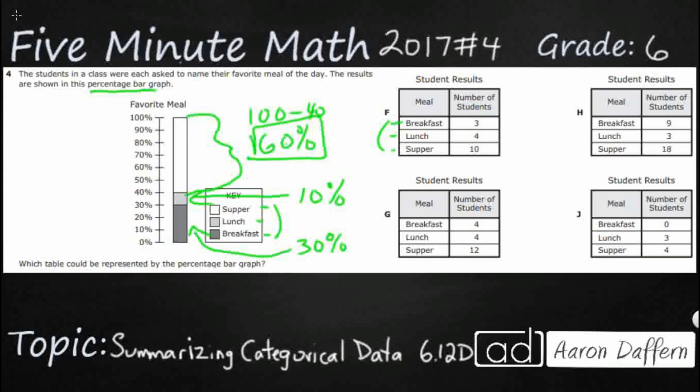And so we can just look at proportions. Look at supper. Supper is going to be the largest. So let's just make sure we've got supper as the largest on all of these. I've got 10, 18, 4, and 12. Those are the largest. Okay.